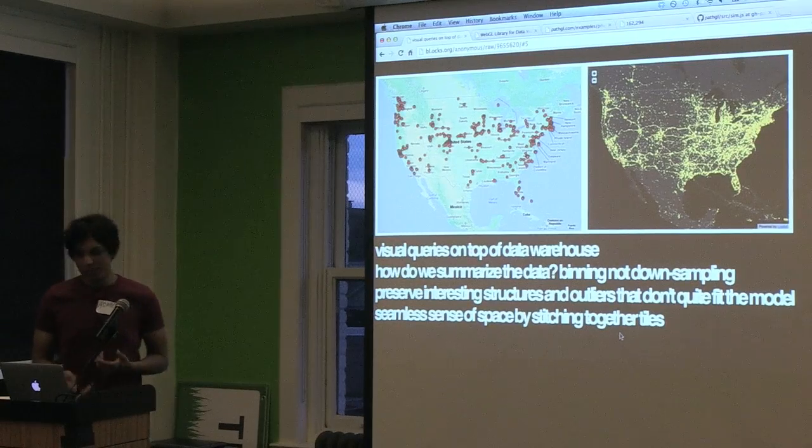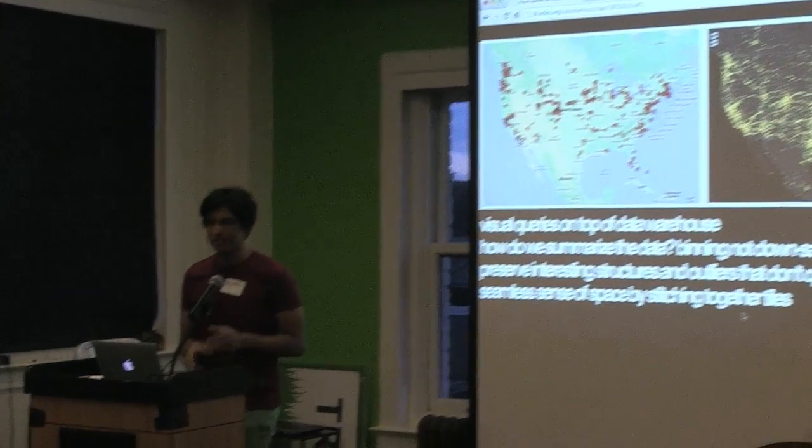Besides binning, they also split data into tiles — similar to how Google Maps works, where it looks like a seamless world but is actually just tiles. You can do the same thing with any kind of information, not just geospatial data. You could split your data across any dimension and get the same effect. But doing that without libraries is kind of hard, so that's the current goal.